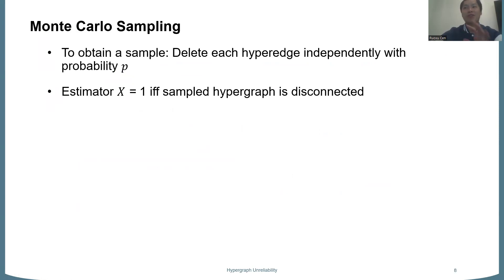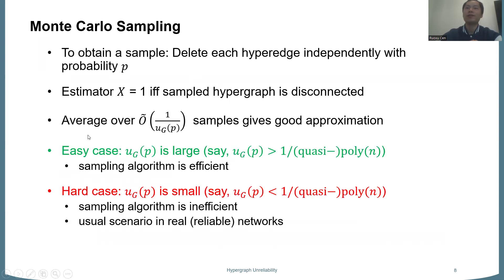So as a sanity check, we are estimating some probability. So the first thing we can do is to do Monte Carlo sampling. That is, we directly draw a sample by deleting each hyperedge with probability p as describing the problem. And then the estimator is just the indicator of whether the resulting hypergraph is disconnected or not. Then this estimator will be unbiased, which means the expectation is just u_G(p). And we are hitting an event of probability u, which means we roughly need one-over-u samples to hit. And actually, by taking slightly more than that, we can get a constant good approximation. Okay. So this is already a good algorithm when u is larger than one-over-quasi-polynomial because this running time is already some quasi-polynomial.